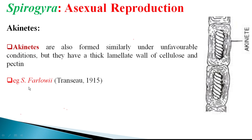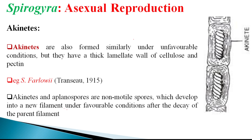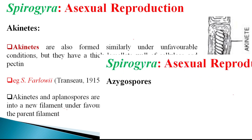Urchinates and planospores are both non-motile spores. They develop into a new filament under favorable conditions, once they arise by means of decay of the parental filament structure.